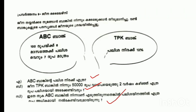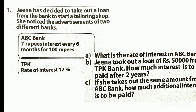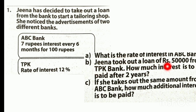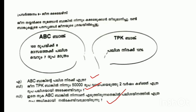The third problem: we have to take out a loan from a bank to start a tailoring shop. She noticed the advertisement of two different banks. ABC bank: 7 rupees interest every 6 months for 100 rupees. TPK bank: rate of interest 12%. What is the rate of interest in ABC bank? Gina took out a loan of rupees 50,000 from TPK bank. How much interest is to be paid after 2 years? Third question: if she takes out the same amount from ABC bank, how much additional interest is to be paid?